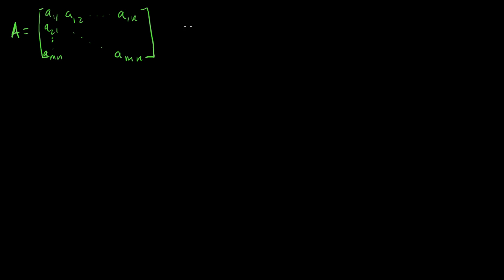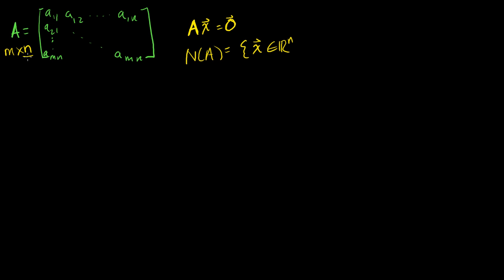I'm going to explore the relationship if I have some matrix A times some vector x, and that equals the zero vector. We saw in the last few videos that the null space of A is equal to all of the vectors x in R^n. So x will have n components, meaning A would have to be an m by n matrix. The null space of A is all of the vectors in R^n that satisfy this equation.